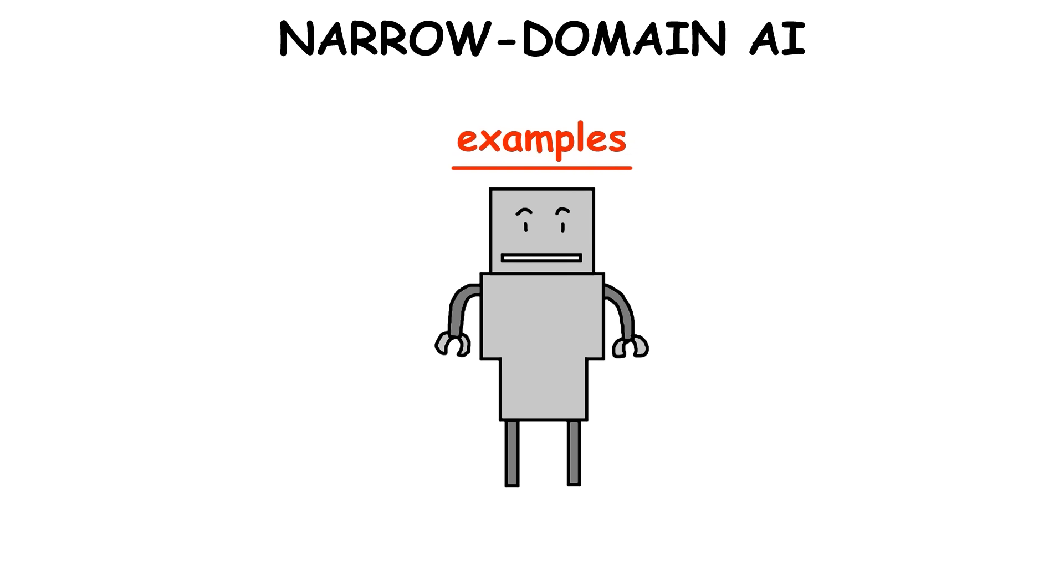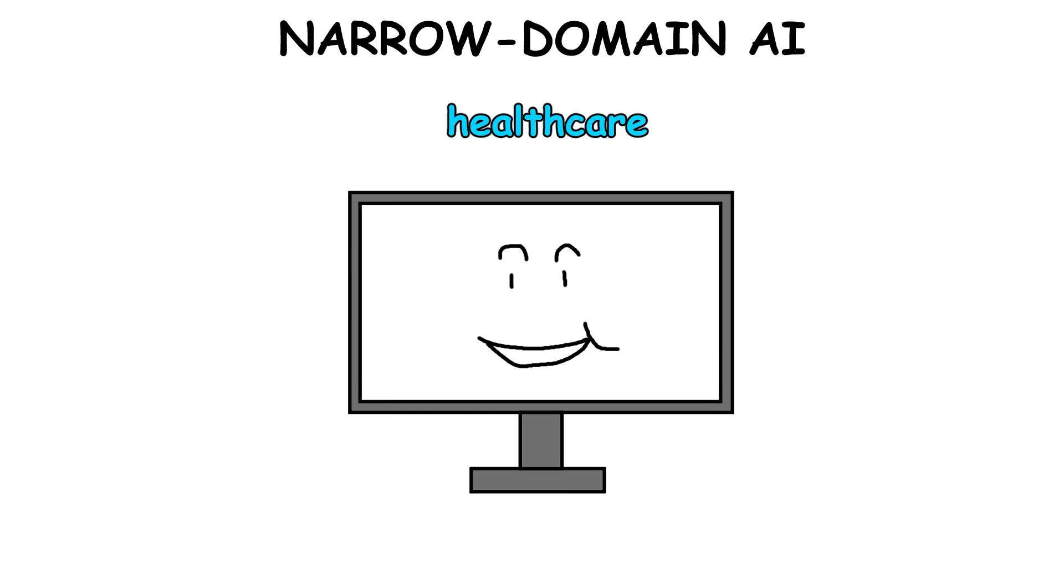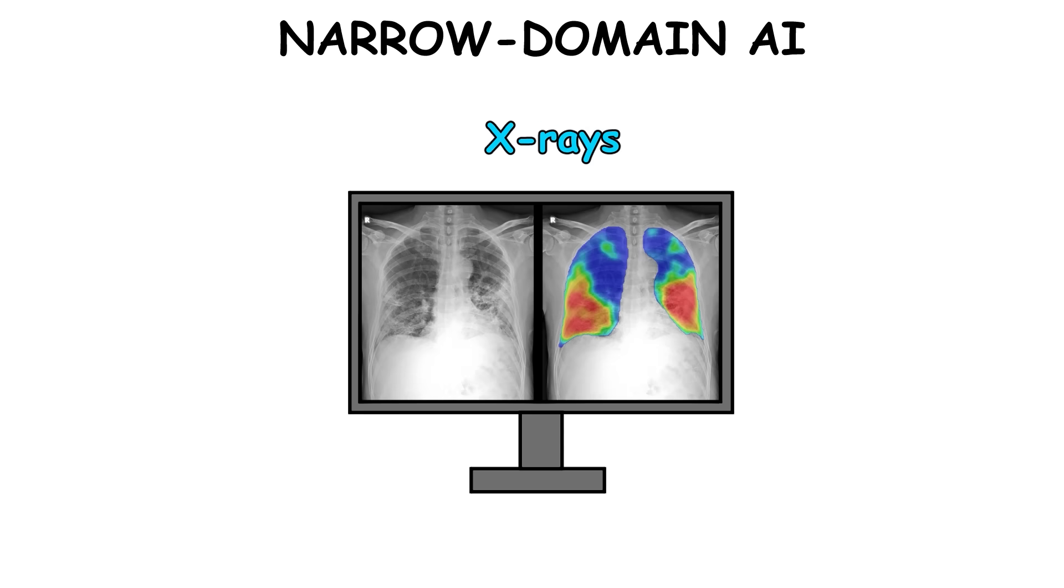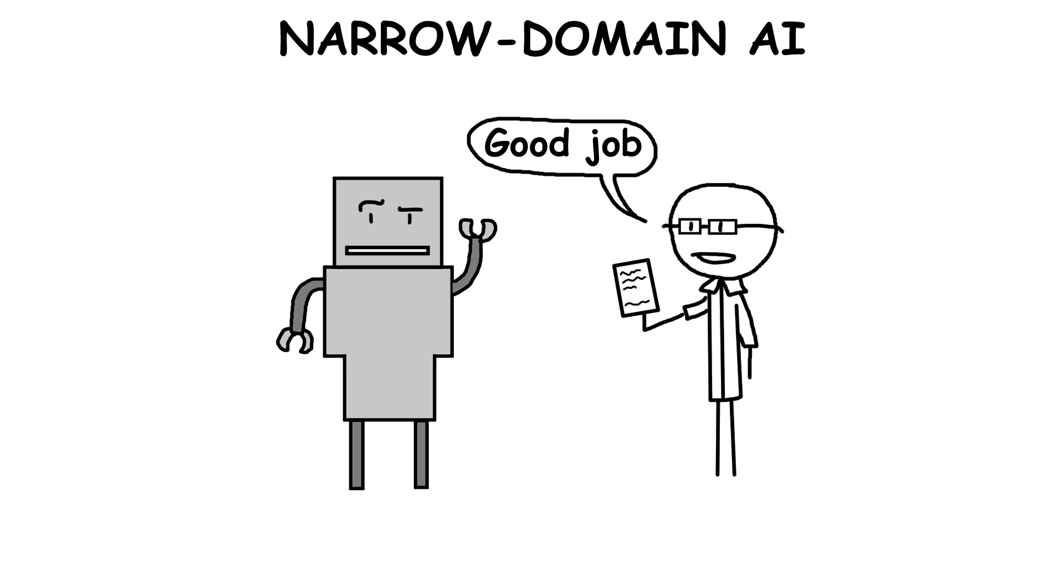You can find examples of narrow AI across different fields. In healthcare, for example, some AI systems are used to look at medical images like MRIs or X-rays, spotting early signs of diseases like cancer, and they're often more accurate than human doctors.